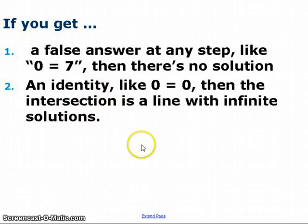Second of all, if you get what's called an identity, if you get all of the variables canceling, but 0 equals 0, or 3 equals 3, something along those lines, that means the intersection of these three equations is one single line, and it's infinite solutions.